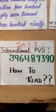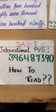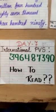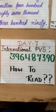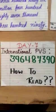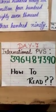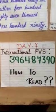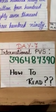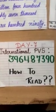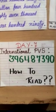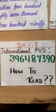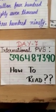Let's read a number. For example, our number is 396487390. We have to read this number according to the International Place Value System. Earlier we learned how to read this number in the Indian Place Value System. If we read this number according to the Indian system, the number will be 39,64,87,390.